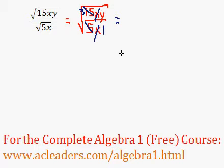So down at the bottom, we're left with 1, because we canceled out both the 5 and the x. So now, we just have the square root of 3y.